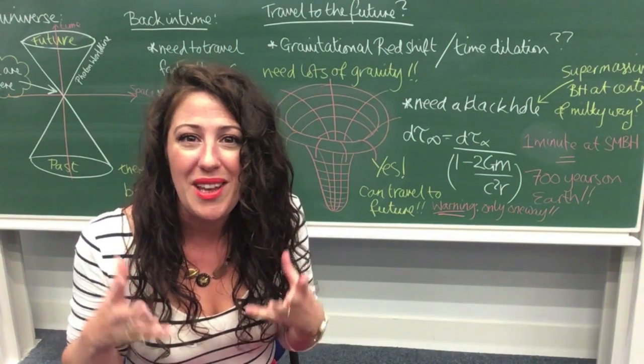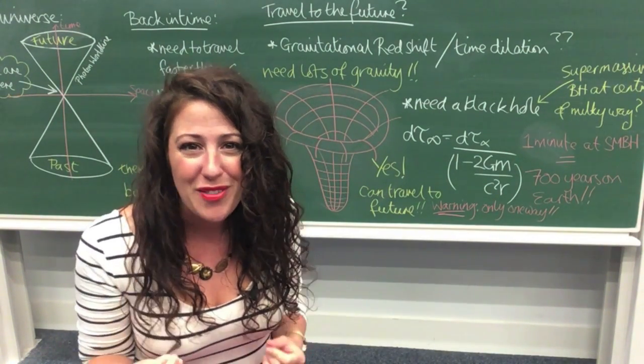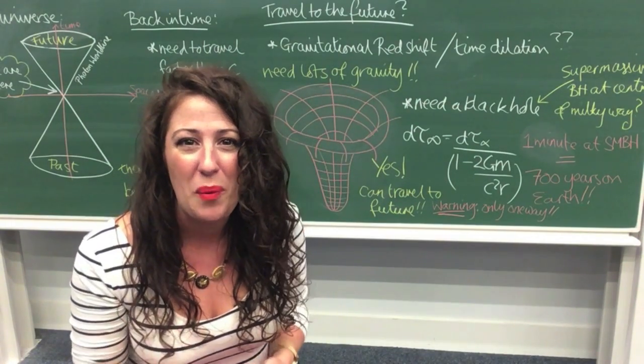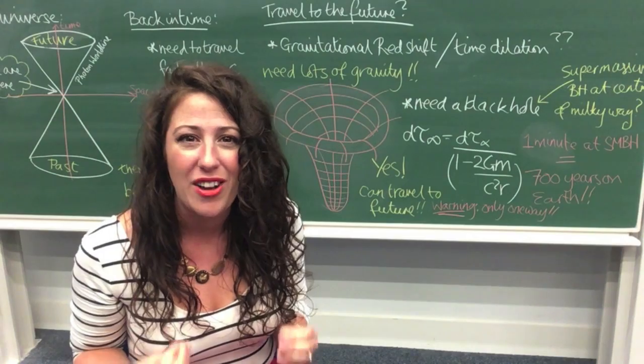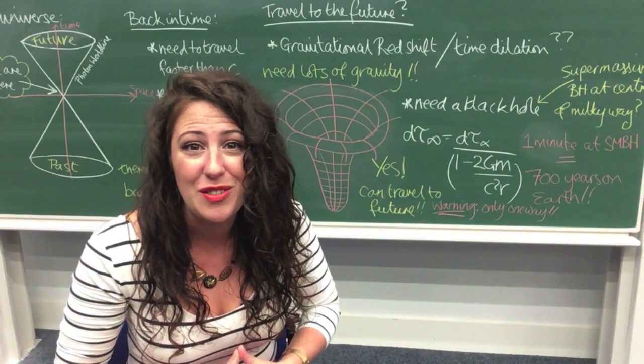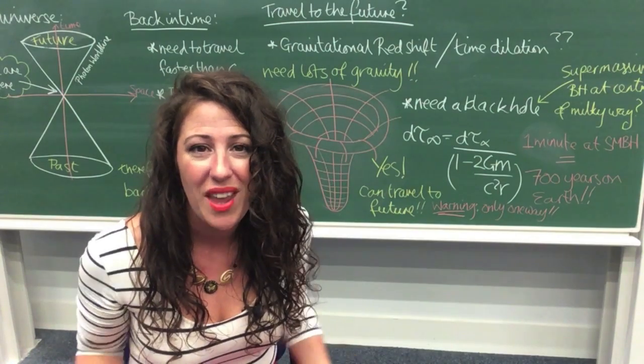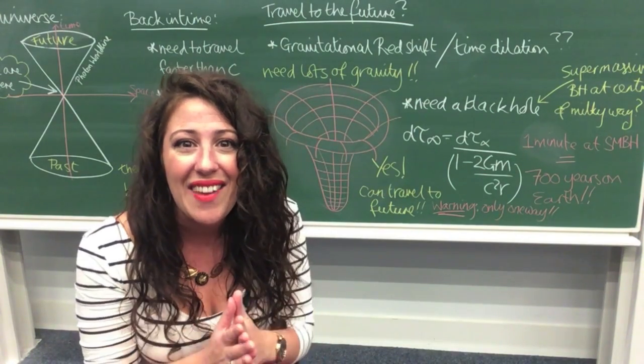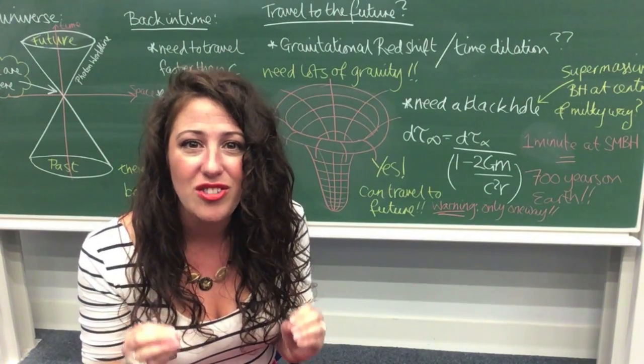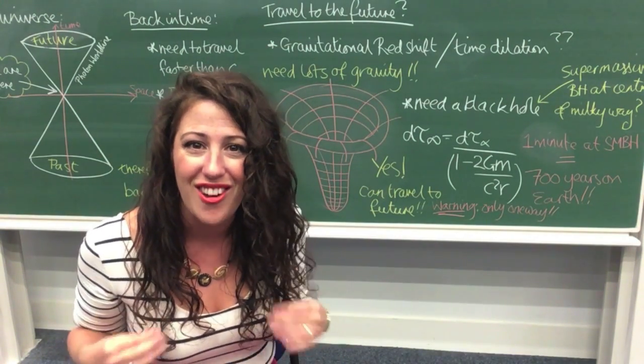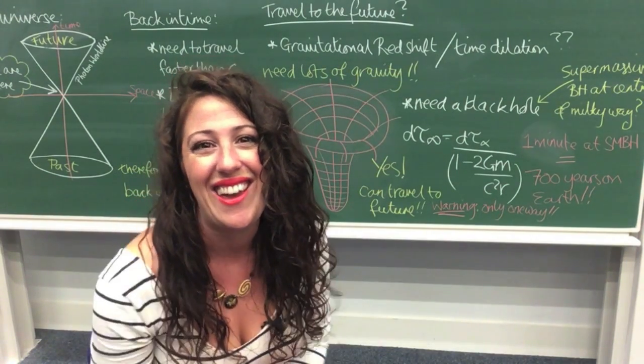But what if we expanded that distance even further? What if we travelled to the centre of the Milky Way galaxy where resides a supermassive black hole whose gravitational field is millions of times stronger than the Earth's? Well, if you stood at the event horizon for just one minute, 700 years would have passed on Earth. So that is how you get your one-way ticket to the future.